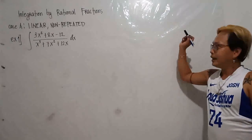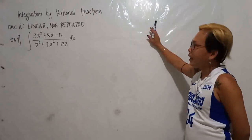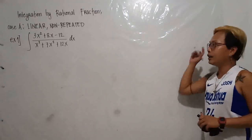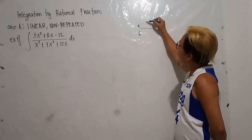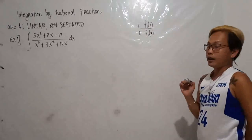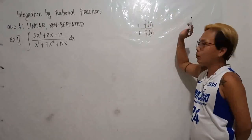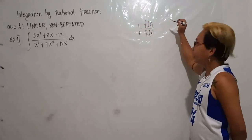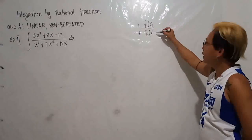Hi everyone, I'm back. I'm going to discuss integration by rational fraction. But first, we must define what a rational fraction is. When we say rational fraction, you have the numerator and the denominator — let's say f1(x) over f2(x). A rational fraction is when the degree of the numerator is always lower than the degree of the denominator.